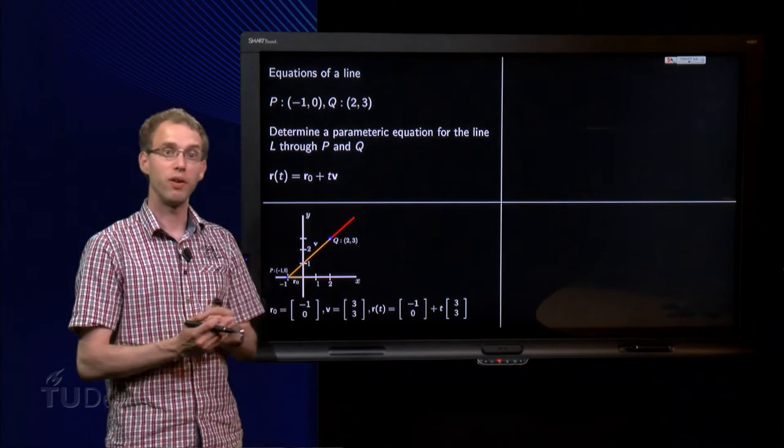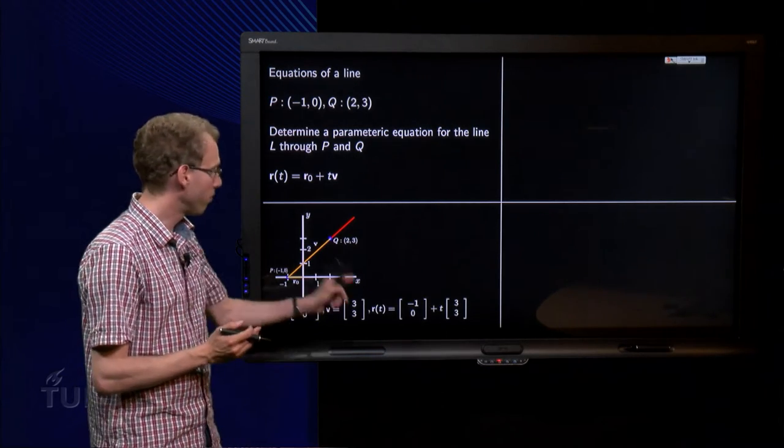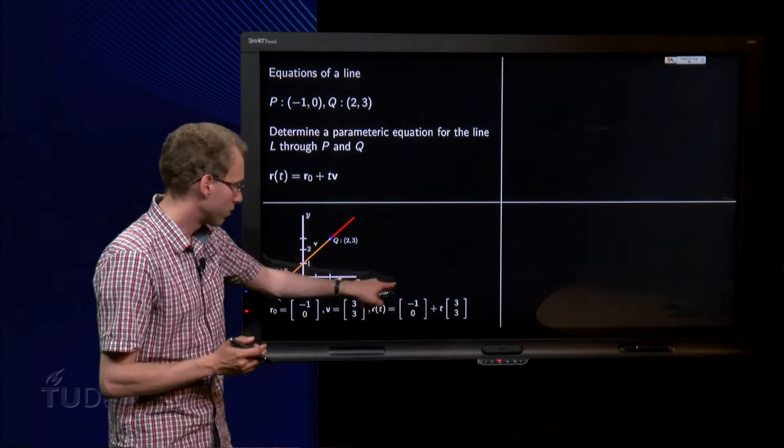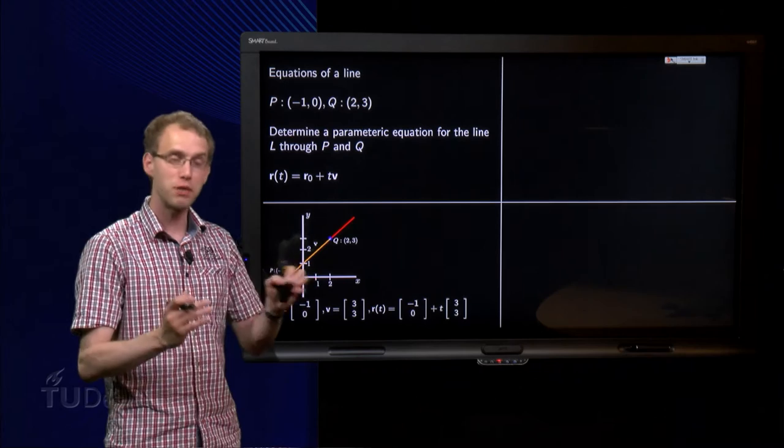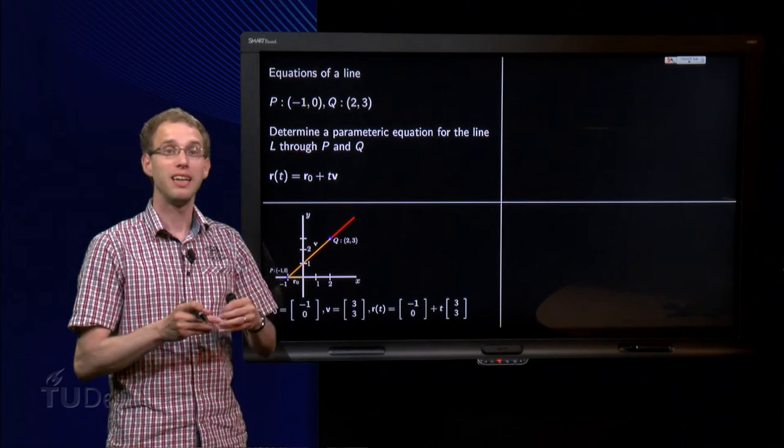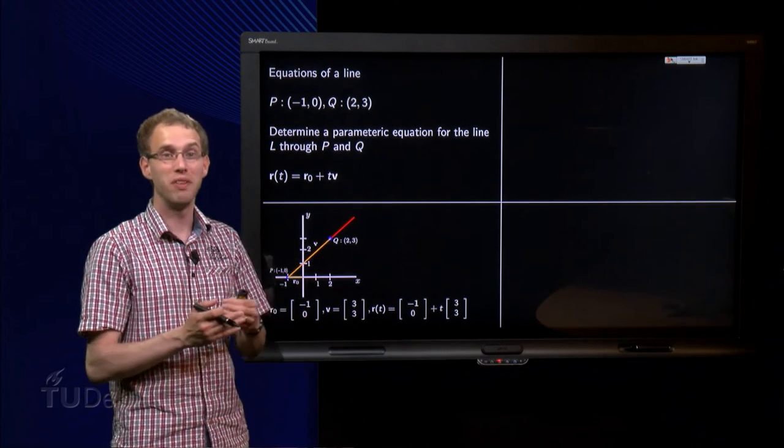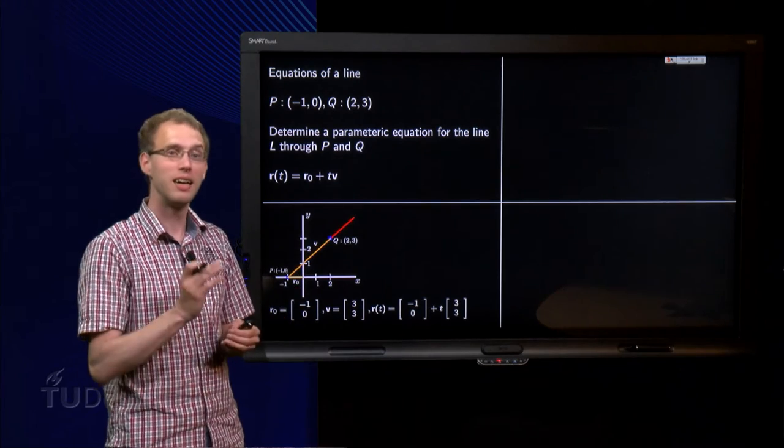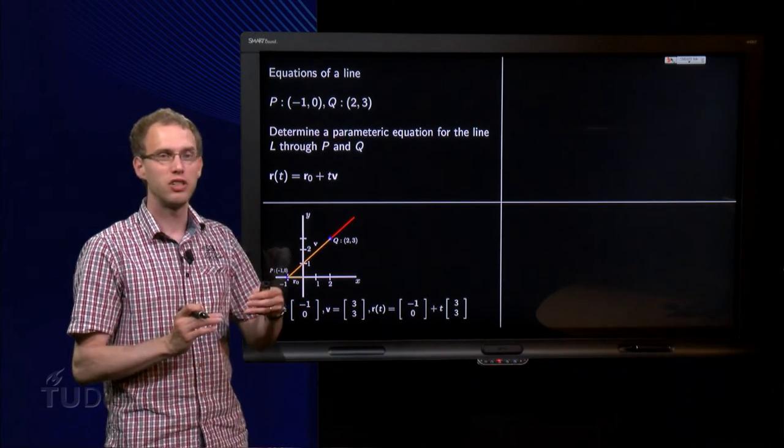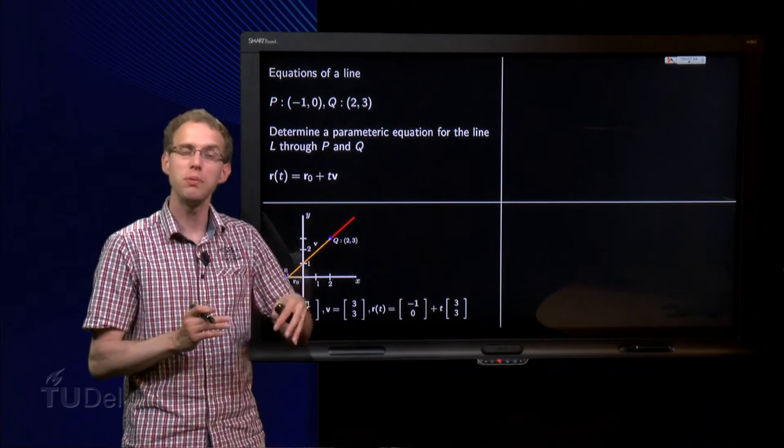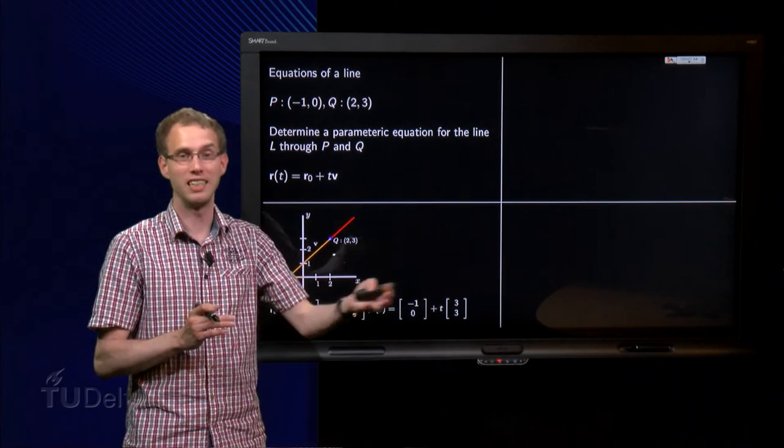So, there we have our parametric equation of the line r of t equals r0 plus t times v. That's the parametric one. How can we get our normal equation y equals ax plus b back? Well, let's see, we have a certain trick for that. It's not so special maybe in 2D, but we will be able to generalize it later on.